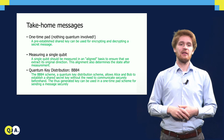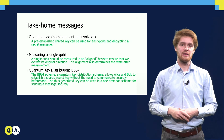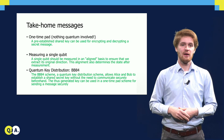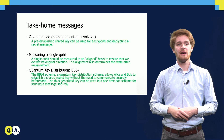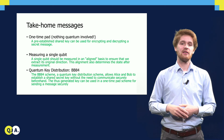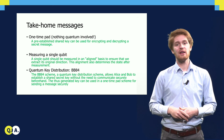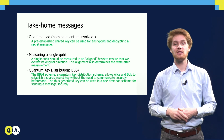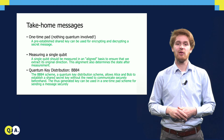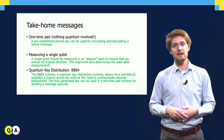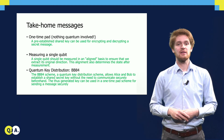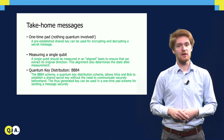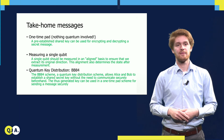We finish this video with the last take-home message. With the BB84 quantum key distribution scheme, Alice and Bob generate a shared secret key without having to communicate securely beforehand, and this key can then be used in a one-time-pad scheme for sending a message securely.